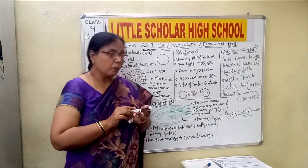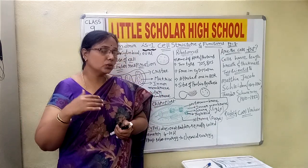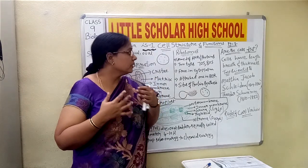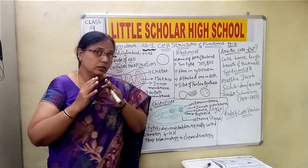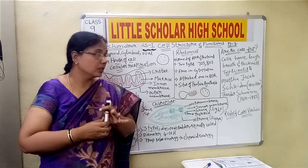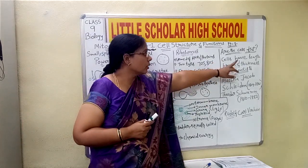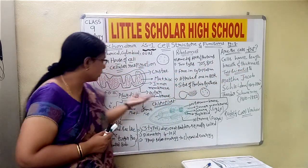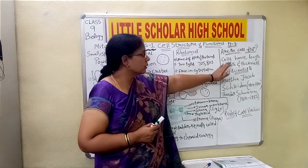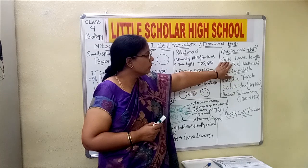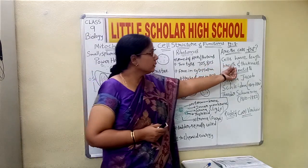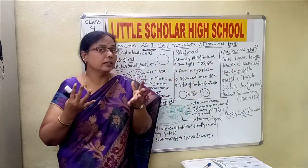This was made clear after observing cells under a much more powerful microscope. It has been confirmed that cells are not arranged in a single plane, and the thickness of the cell can be seen. Cells have length, breadth, and thickness, but the thickness of the cell cannot easily be calculated under a normal microscope.